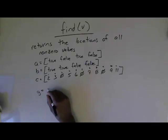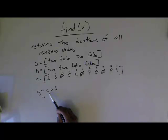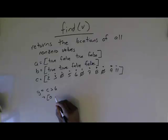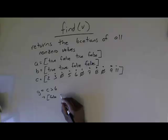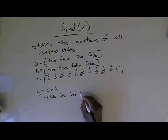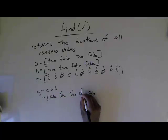Vector G equals C greater than 6. C greater than 6 is a logical expression with a scalar applied to a vector, so it applies the comparison to each element. You're going to get false for elements where the condition doesn't hold: two is not greater than six, three is not greater than six, zero is not greater than six, five is not greater than six, and six is not greater than six.